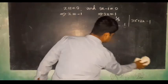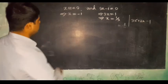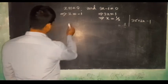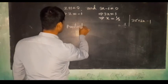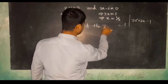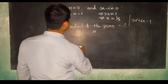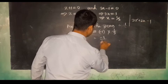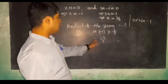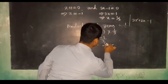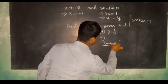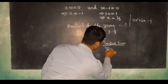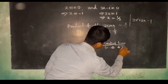Now if we find out the product of the zeros, the product of the zeros equals minus 1 multiplied by 1 by 3, which is minus 1 by 3. Here minus 1 is the constant term and 3 is the coefficient of x squared. So the product of zeros equals the constant term divided by the coefficient of x squared.